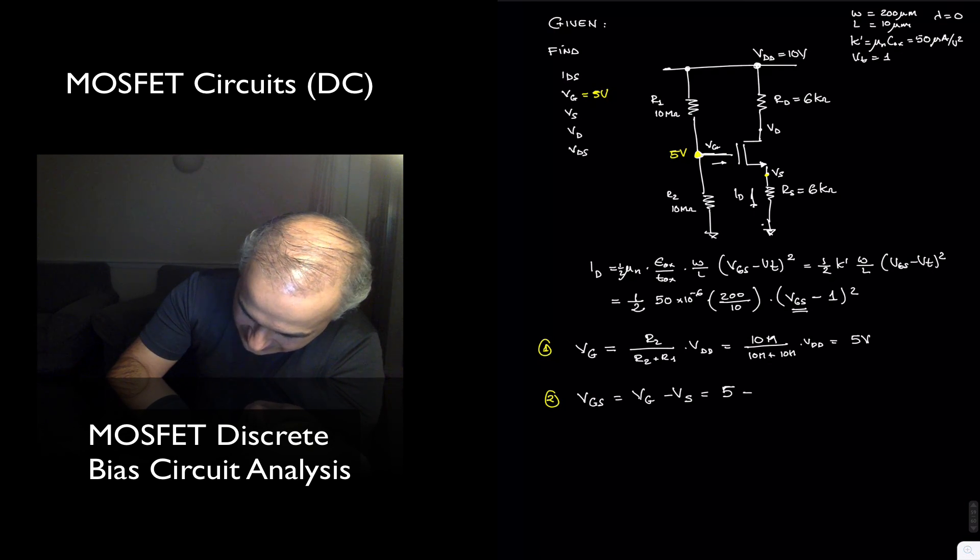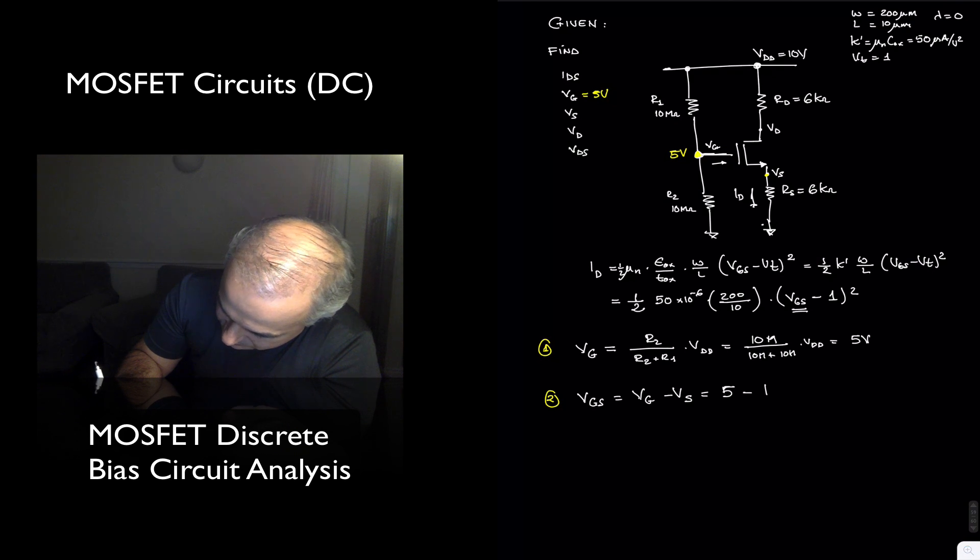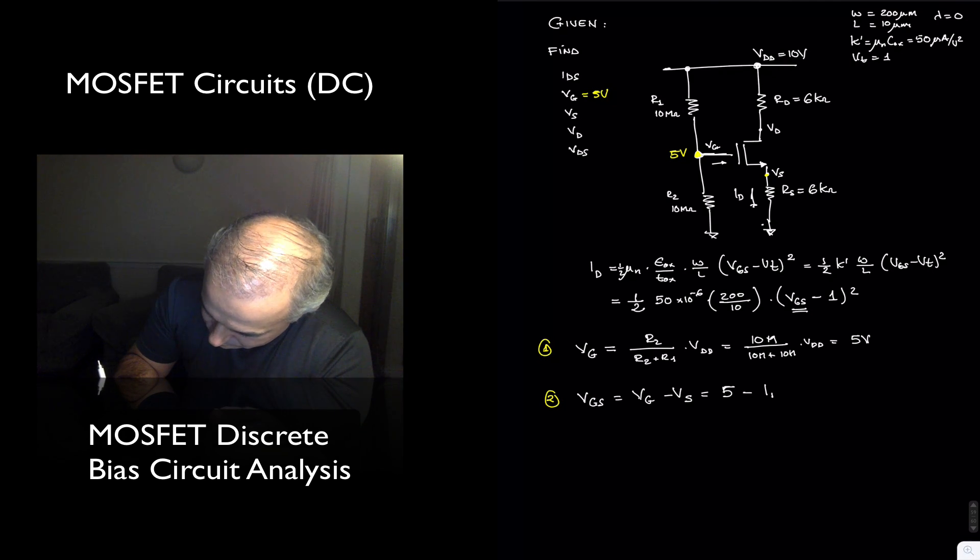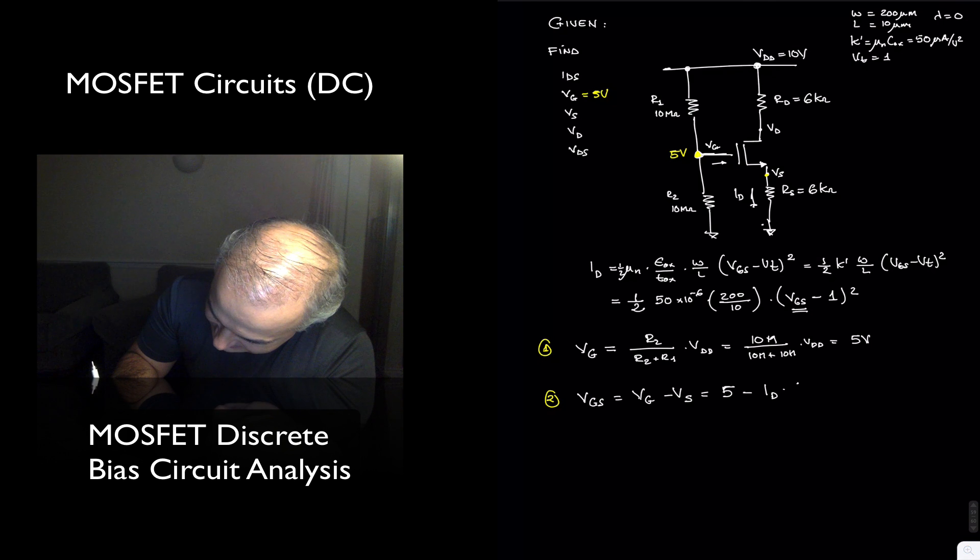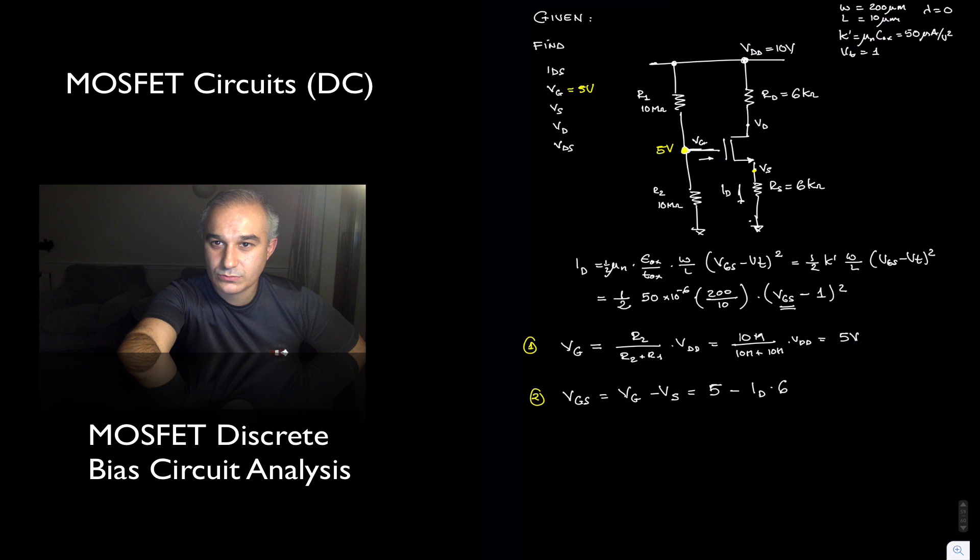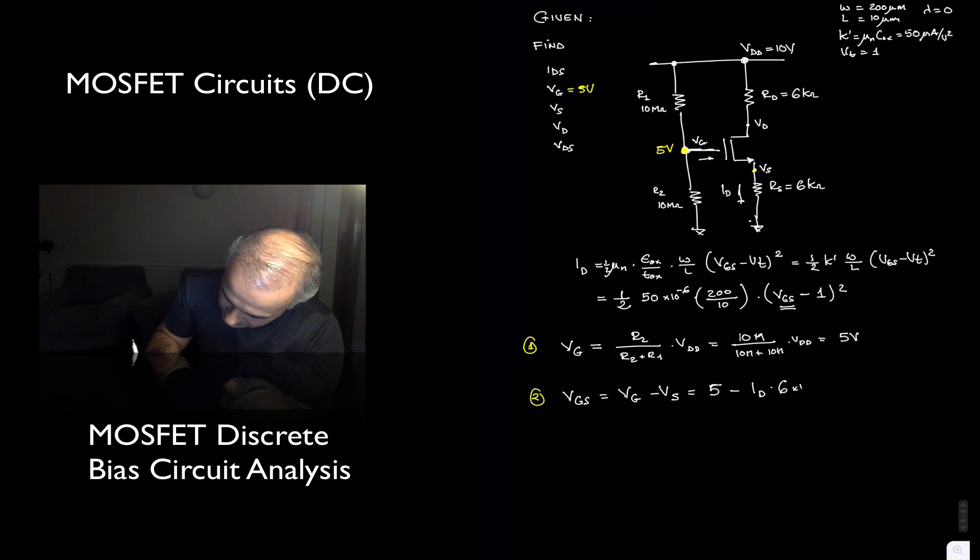And the voltage at the source, if this is Id, is equal to the drain current, or the drain source current, or the source current, they are the same, times 6k, 6 times 10 to the 3.